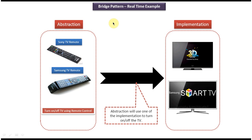Now we will see the real-time example of bridge design pattern. In bridge design pattern there are two layers. The first layer is the abstraction layer and the second layer is the implementation layer. If I make any changes in the implementation layer, it won't affect the abstraction layer. Like that, if I make any changes in the abstraction layer, it won't affect the implementation layer, as per the bridge design pattern.